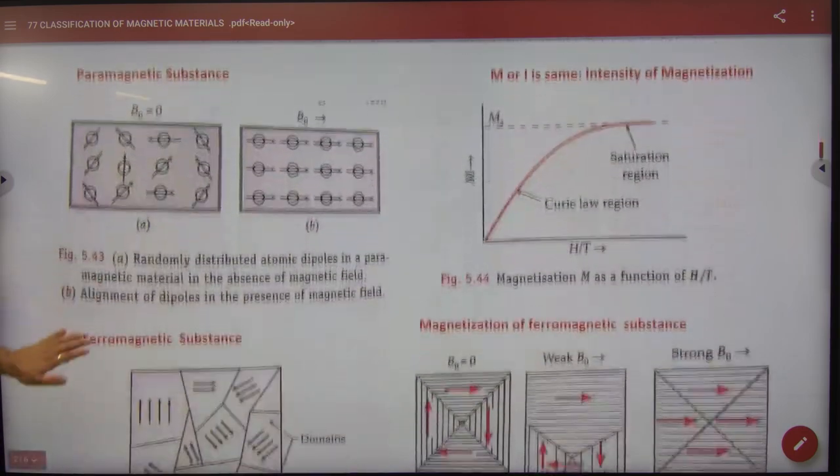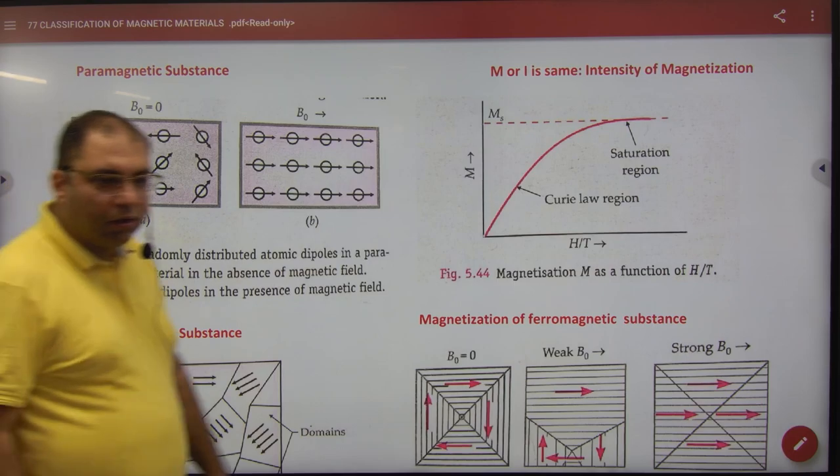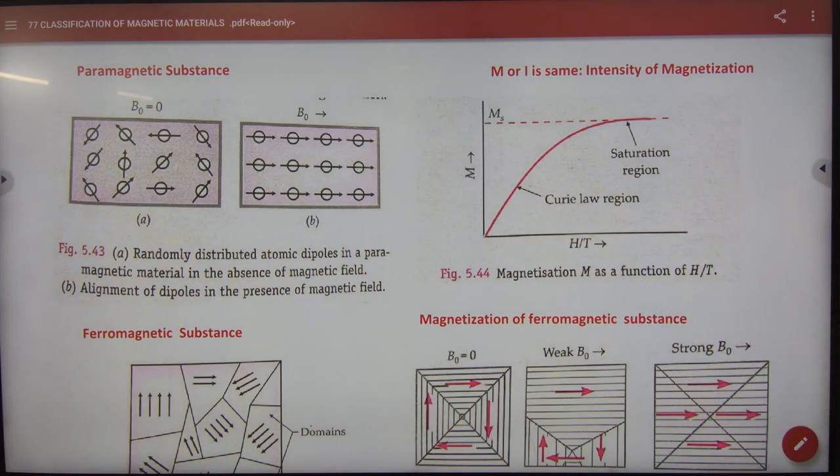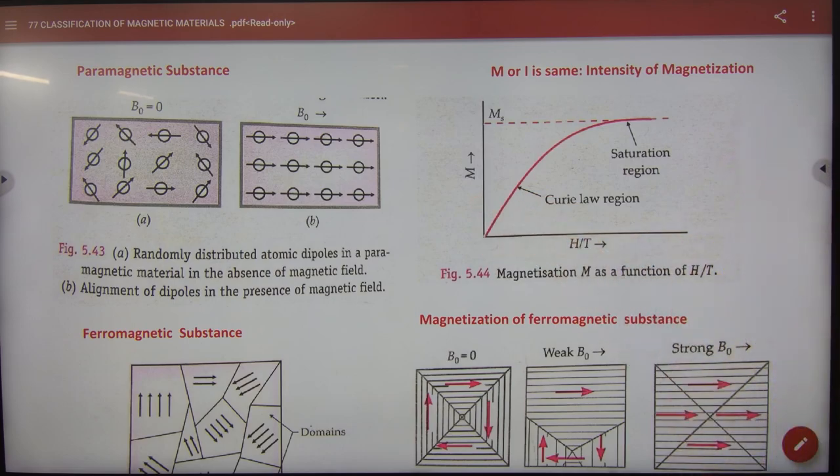So this law is like this. What is the material about paramagnetic substances? This graph is NCERT point of view. The graph is capital M and H upon T. Curie's law has done H upon T. So, capital M.